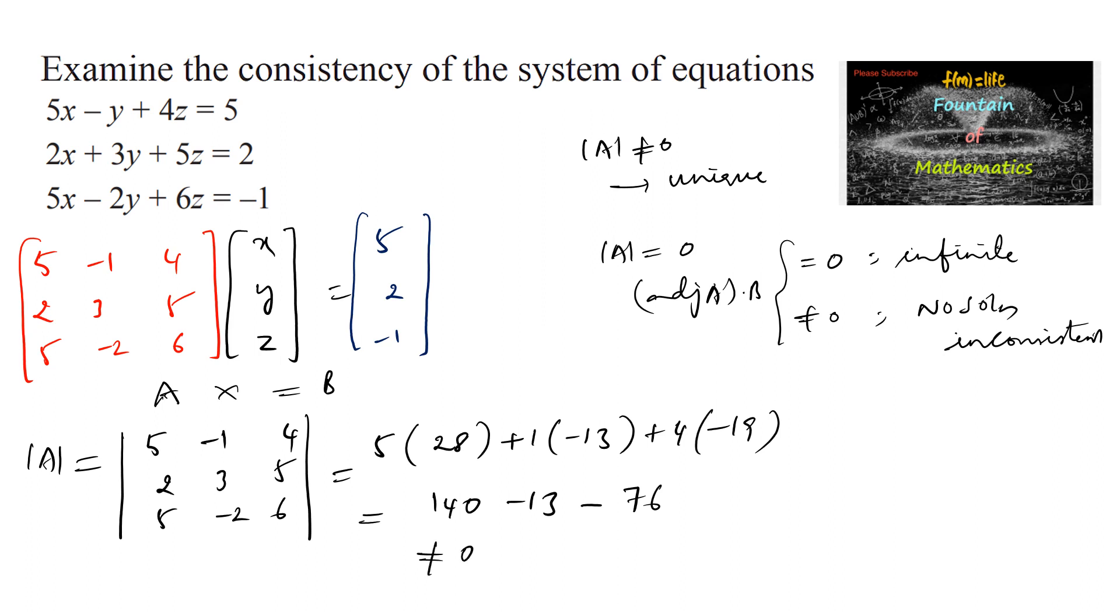Clearly we can say it is not equal to 0, and hence if |A| ≠ 0, the given system is having unique solution. Hence the given system has unique solution and it is consistent.